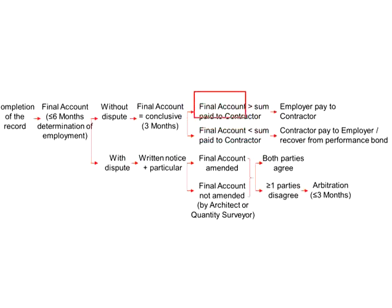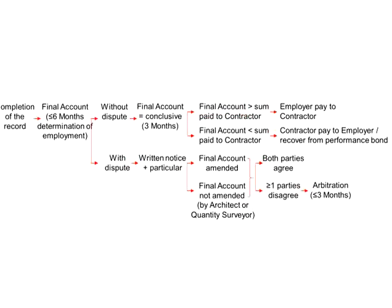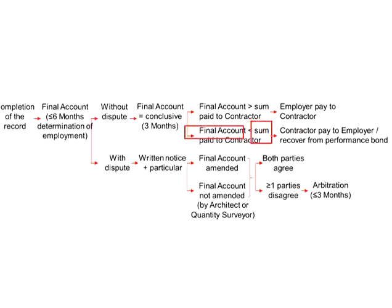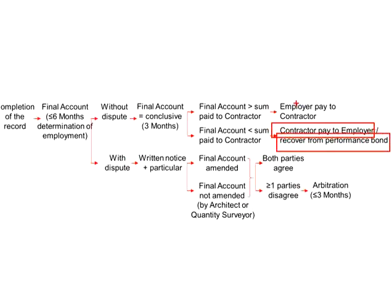It is either the final account is greater than the sum paid to the contractor, or it is less than the sum paid to the contractor. If the final account is more than the sum paid, the employer still owes money to the contractor and will need to pay the balance. If the final account is less than the sum paid, the contractor will have to pay back to the employer, or the employer can recover the sum from the performance bond.